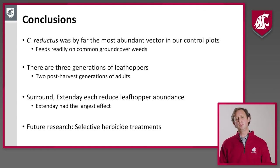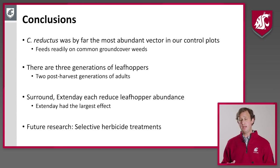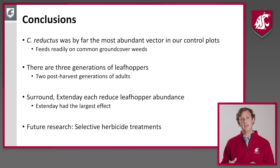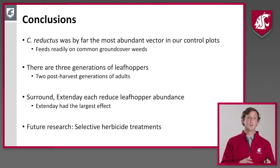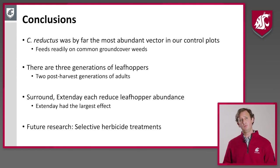In conclusion, Colladonus reductus was by far the most abundant vector in our control plots. It feeds readily on many common ground cover weeds, especially mallow and alfalfa, and we think they may actually prefer a more diverse diet. There are three generations, and two occur after harvest. Surround and Extendate each reduced leafhopper abundance, with Extendate having the largest effect, likely because it removes alternative host plants. In the future, we'd like to evaluate selective herbicide treatments to remove broadleaf weeds, since grasses are not good leafhopper hosts and don't host the phytoplasma — meaning grasses are actually our friend in this scenario.